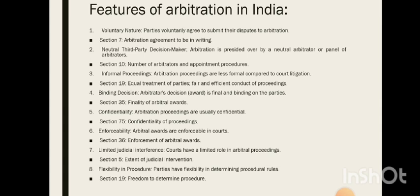The second feature is a neutral third-party decision maker. Section 10 deals with the number of arbitrators. Section 10(1) states parties are free to determine the number of arbitrators, provided it shall not be an even number. Section 10(2) states that failing such determination, the arbitral tribunal shall consist of a sole arbitrator. An odd number is required so that when arbitrators are divided, the majority decision can be final without deadlock. The third feature is informal proceedings, dealt with in Section 19.